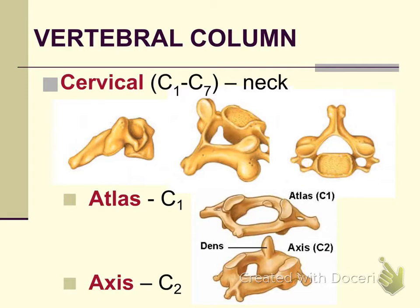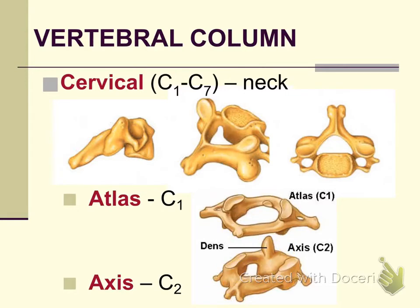The first two cervical vertebrae have names. C1 is called the atlas — it forms a ring and lacks the structure called the spinous process. C2, the axis, does have a spinous process and forms a ring, but what is distinct about C2 is that it has a structure called the dens that points straight up. C1 and C2 have names because they do not look like the typical cervical vertebrae.